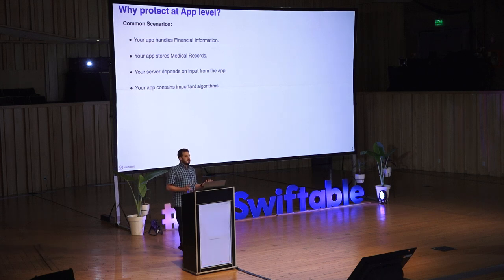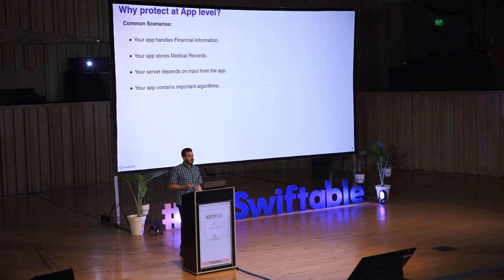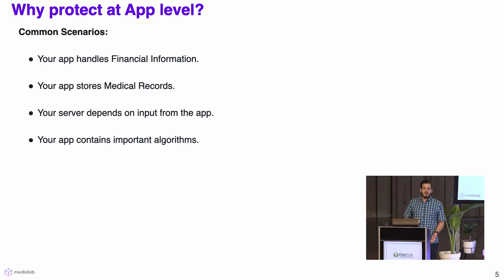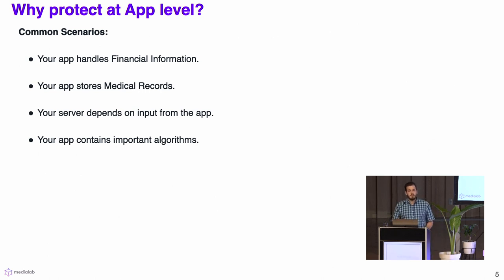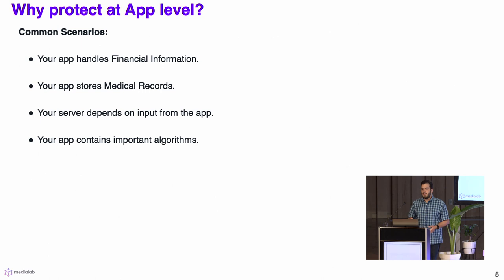But why should we take measures at the application level? There are common scenarios for this. For example, you might handle private information like financial records or medical records. Your server may rely on input from your application. Maybe your application contains some important algorithms you want to protect so they don't get stolen. And when you distribute the application in the App Store, some developers may think everything is secure and nobody can tamper with their application. But the truth is that Apple does take some measures to protect apps from tampering, but this doesn't cover everything — so in some cases, you might want to take additional measures.